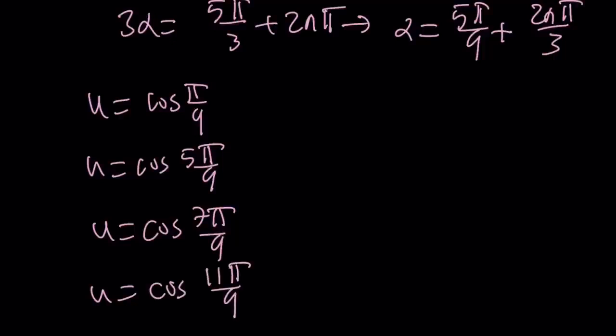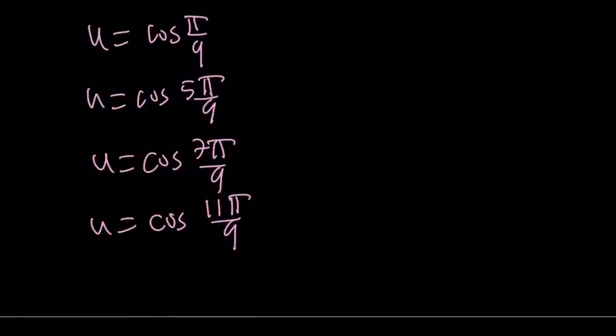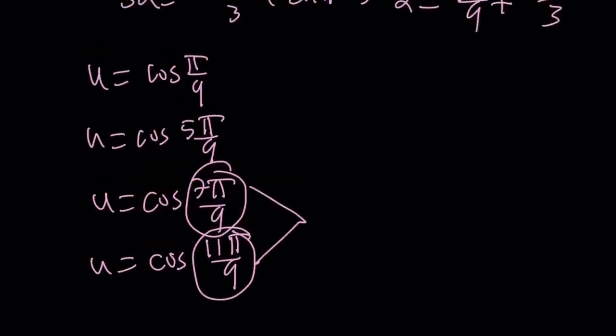But why did I get 4 values? I'm solving a cubic. I'm getting 4 values because if you look at these two values, they're equivalent. If you look at 7π/9 and 11π/9, their sum is 2π, therefore their cosines are equal, which is going to end up with a single solution. Make sense? So from here, we get the same solutions.